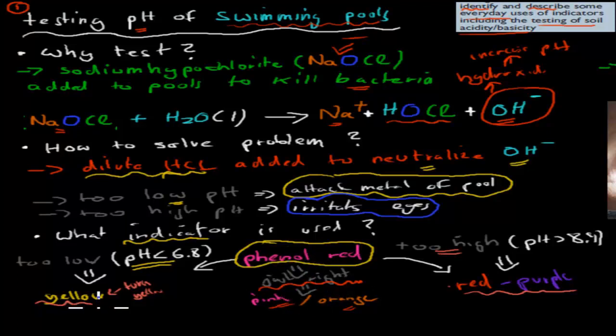So if we have phenyl red, these indicators and we put it into our swimming pool, if it stays pink orangey that's good. If it turns yellow that means our pH is too low and we have to add more base to neutralize it. If it turns red purple that means it's too basic and we have to add more acid to neutralize it. But using this phenyl red we can actually figure out if there is a problem or not.